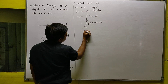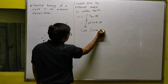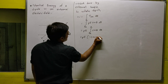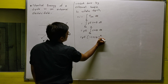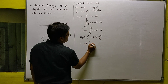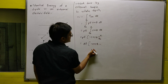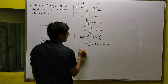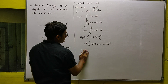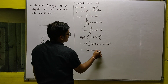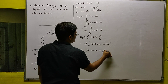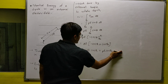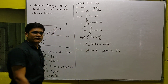PE is constant, so you only integrate sinθ. The integration of sinθ is −cosθ. Substituting the limits θ₀ to θ₁ gives: PE(−cosθ₁ − (−cosθ₀)) = −PE cosθ₁ + PE cosθ₀. This work gets stored as the potential energy of the dipole.